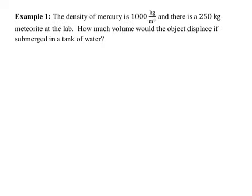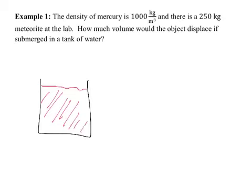Example 1: The density of mercury is 13,600 kg/m³ and there's a 250 kg meteorite at the lab. How much volume would the object displace if submerged in a tank of mercury? Let's think about this logically. We take a meteorite and drop it into the mercury. What's going to happen to the level of mercury? It goes up — whose principle is that? Archimedes' principle.